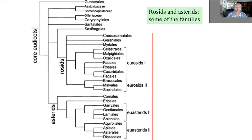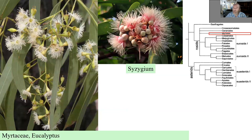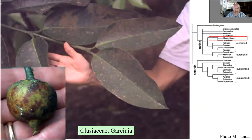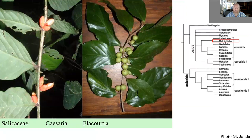Now we are getting to the huge lineages of rosids and asterids, where we will just go through the phylogeny and show a few pictures. We start with Myrtales: Myrtaceae with Eucalyptus and Syzygium — Eucalyptus very important especially in the Australian region. Combretaceae with Terminalia, one of the long-lived secondary pioneer species. Salicaceae — we know willows from the temperate zone; the counterparts in the tropics are Casearia and Flacourtia.